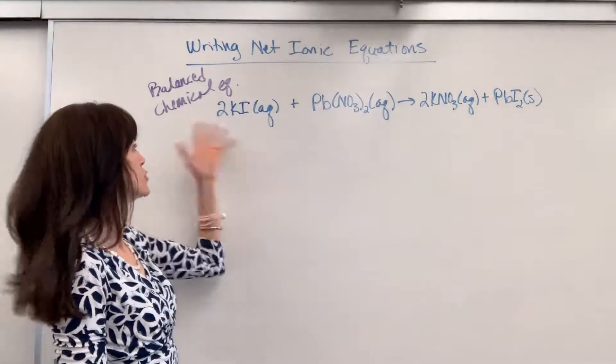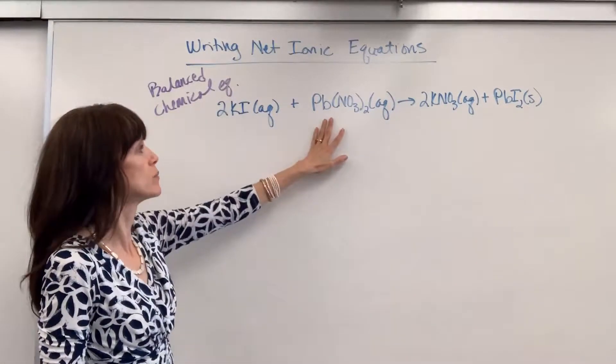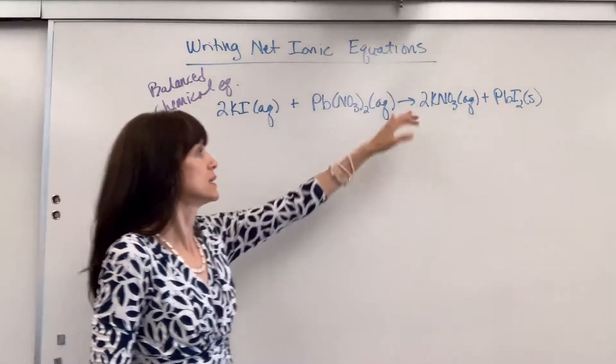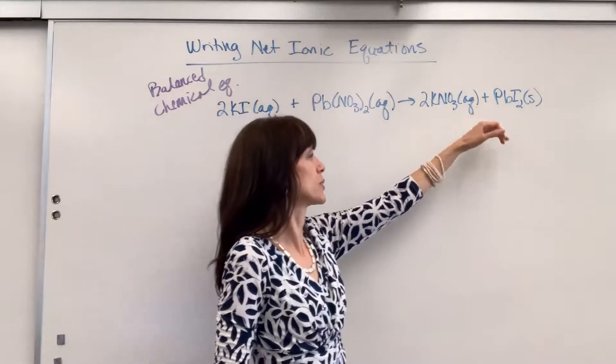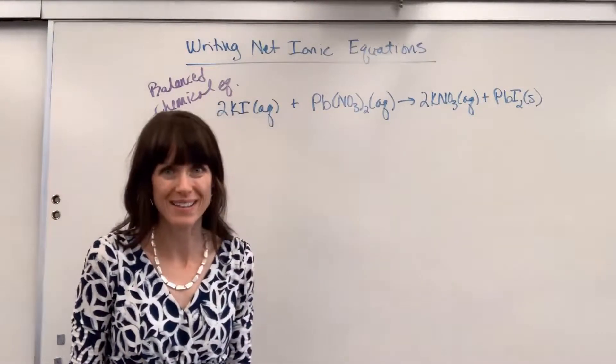So here we have it. I have my two moles potassium iodide plus one mole of lead two nitrate yields two moles of potassium nitrate plus one mole of lead two iodide.